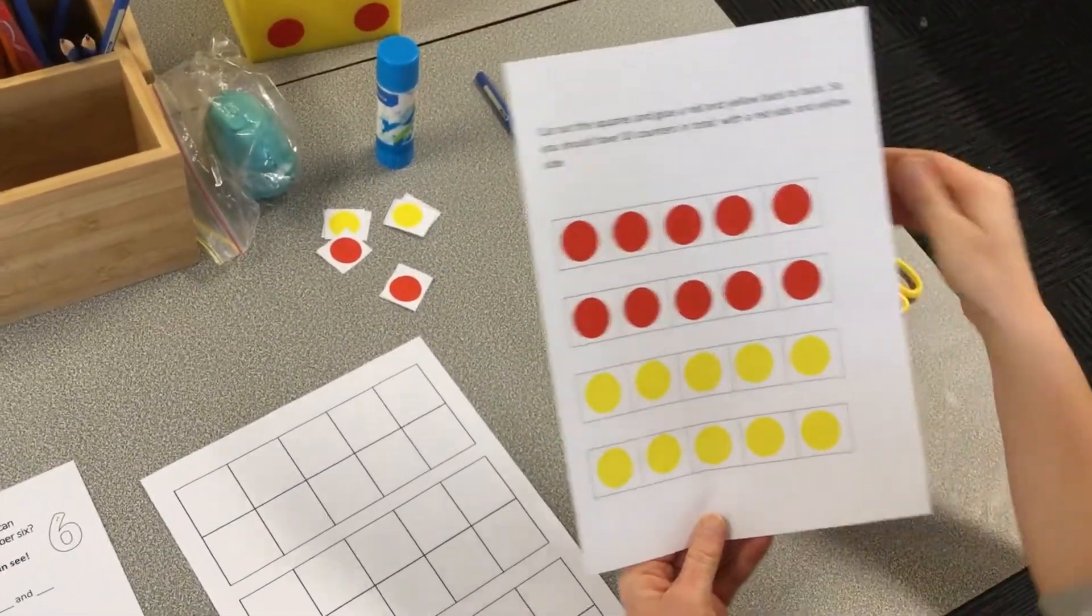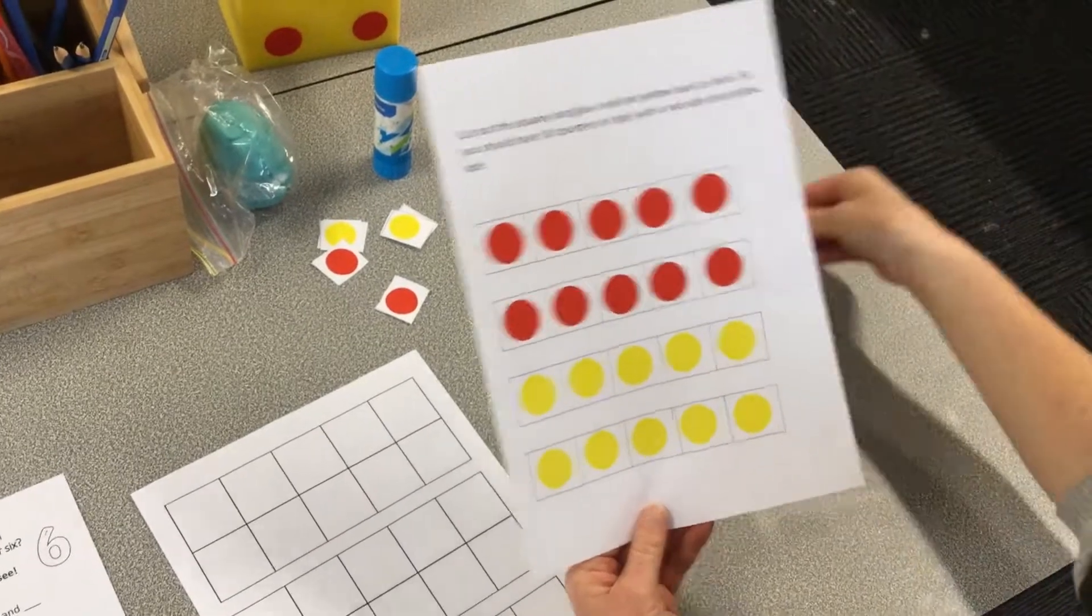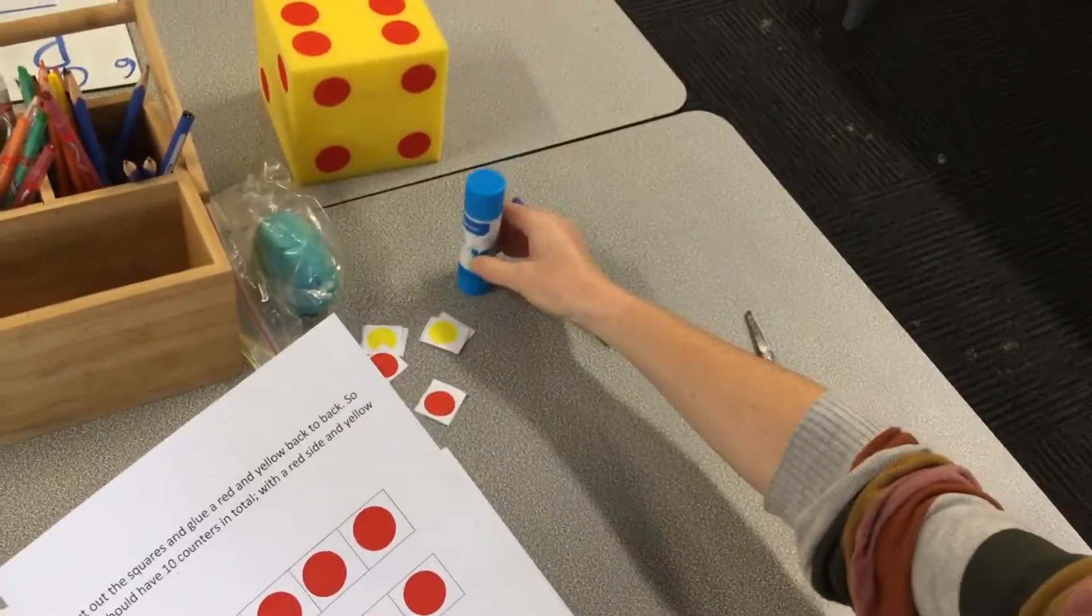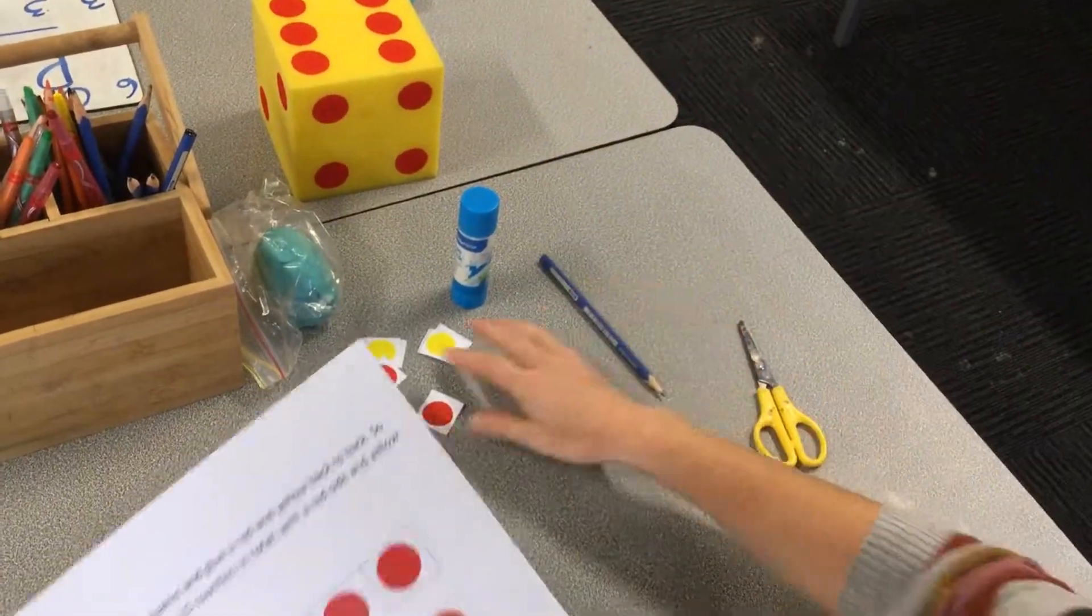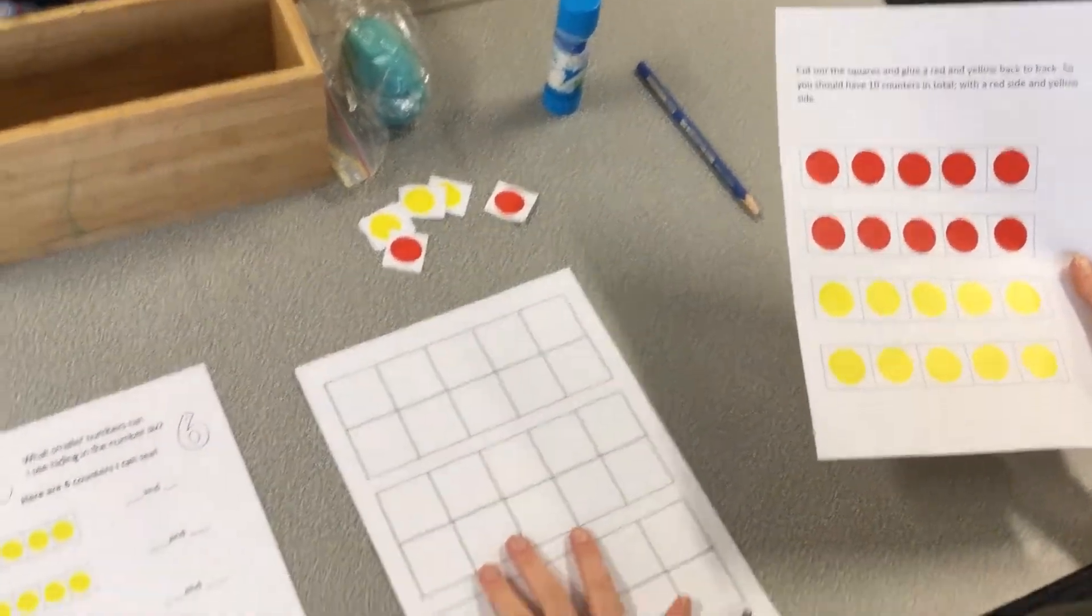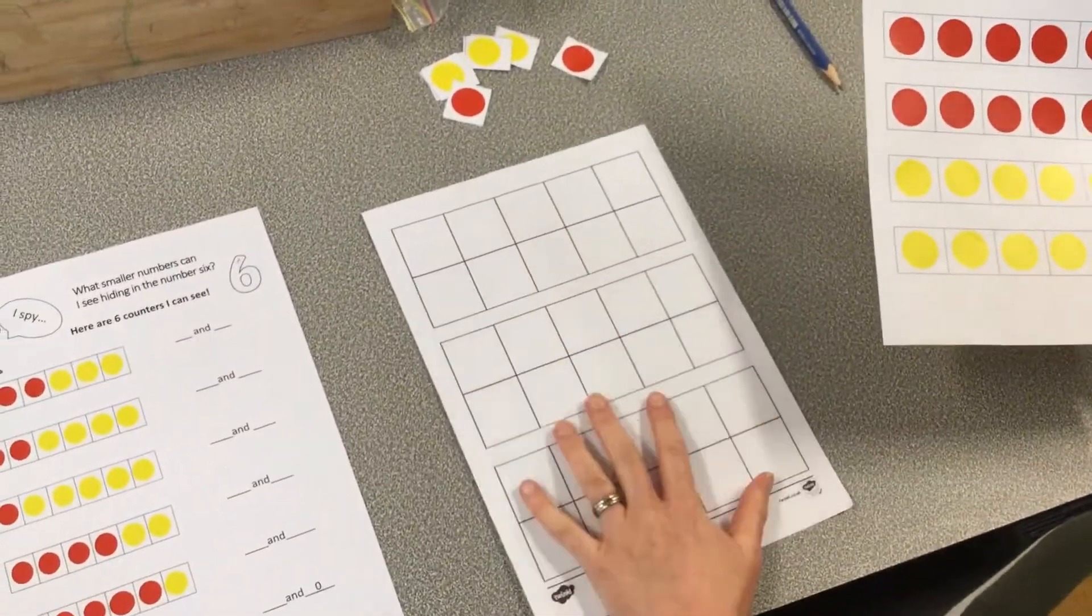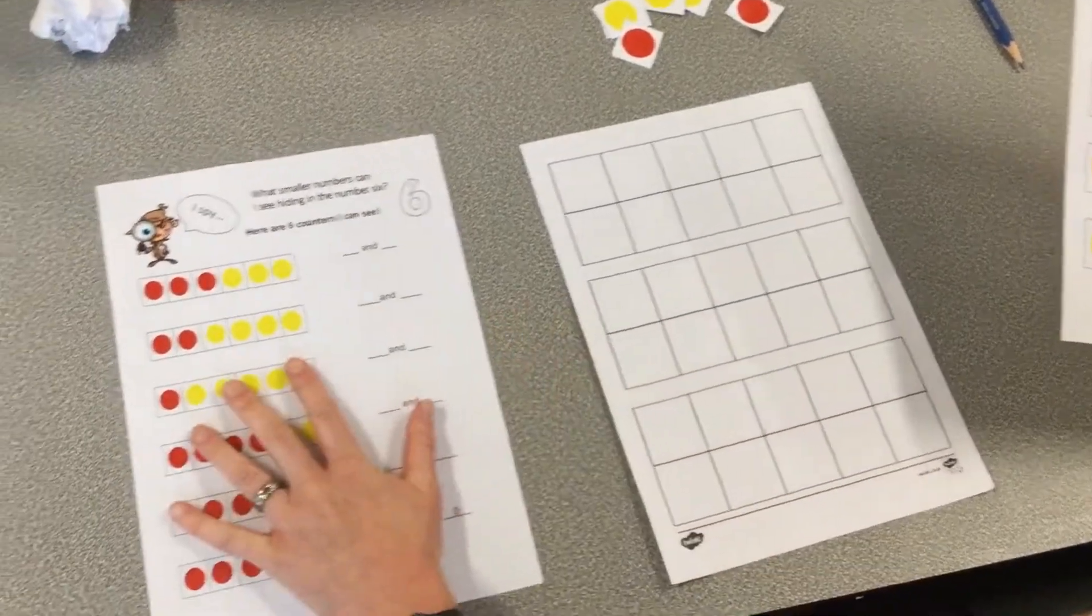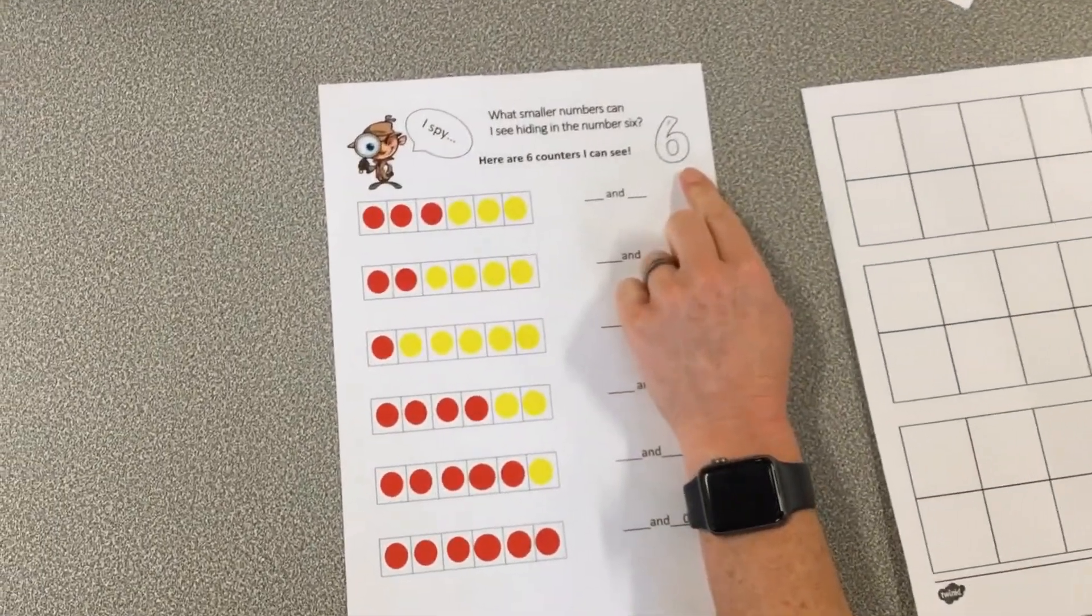Just like yesterday, you're going to need scissors, glue, a pencil, your counters from yesterday, the tens frame page to use as a template to help you learn, and then the number six page, which you can see over here.